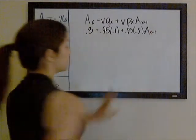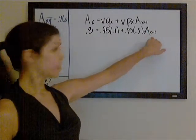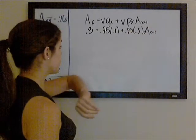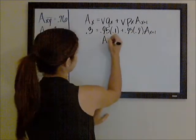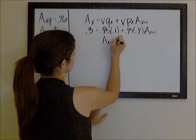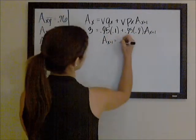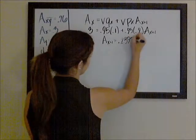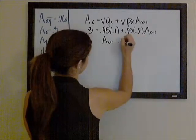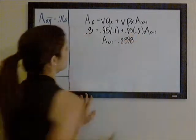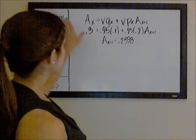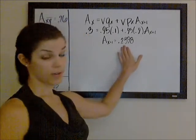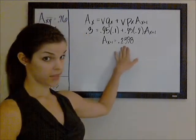We can solve for this new insurance on x at x plus one, and that is 0.2398. So we've moved forwards to find out what our insurance is at x plus one.